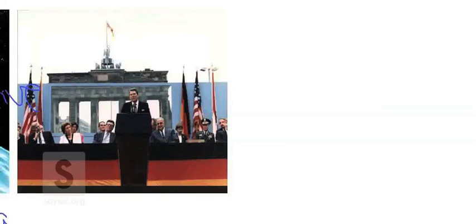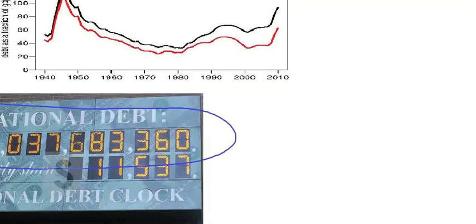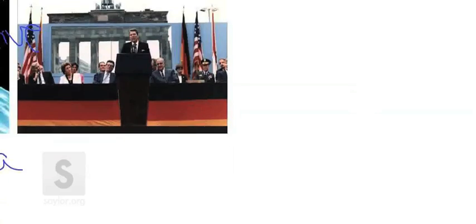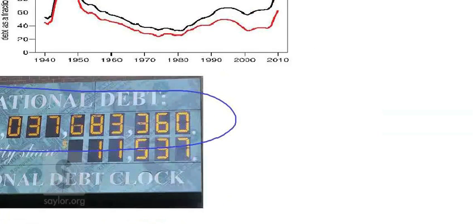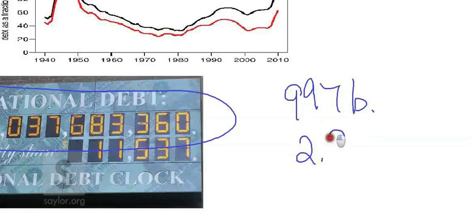All this military spending, in addition to all these domestic policies, contributes to a huge national debt. The debt during this time period grows just exponentially, grows from about $997 billion all the way up to $2.8 trillion dollars. Just a massive increase in the national debt, and of course today it's much higher than that. Reagan admits one of his great disappointments is that the U.S. debt went as high as it did during his administration.